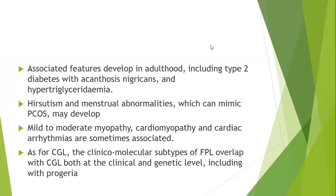The associated features of familial partial lipodystrophy include type 2 diabetes, acanthosis nigricans, and hypertriglyceridemia, like its generalized counterpart. Hirsutism and menstrual abnormalities mimic PCOS as seen in the generalized form. Mild to moderate myopathy, cardiomyopathy, and cardiac arrhythmias are sometimes associated — features not described in the generalized form. The clinico-molecular subtypes of familial partial lipodystrophy overlap with congenital generalized lipodystrophy at the clinical and genetic levels, along with association with progeria.